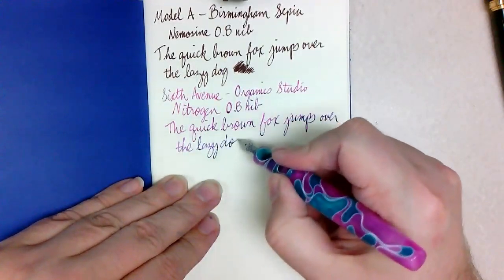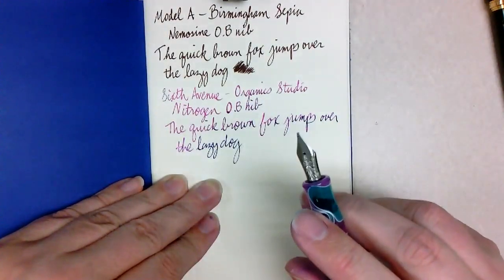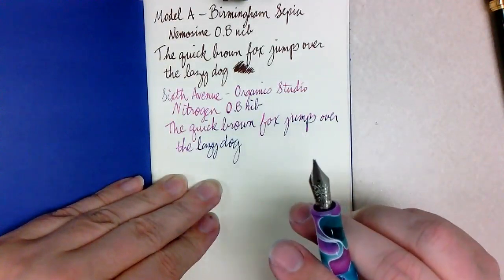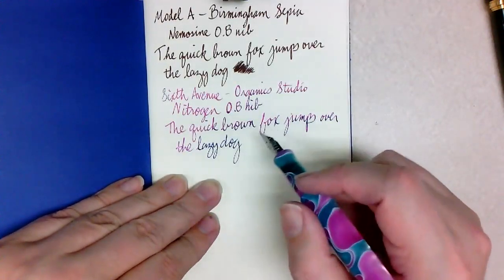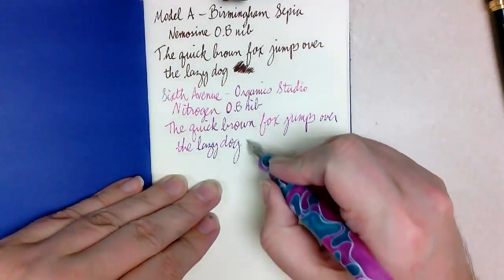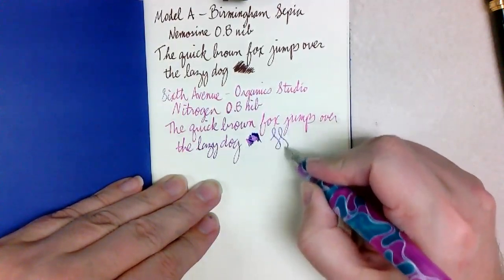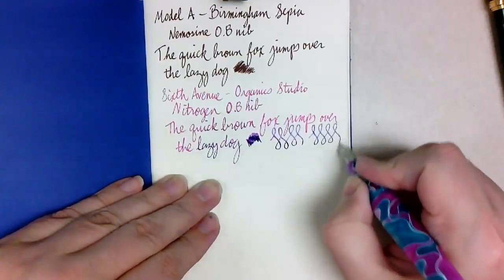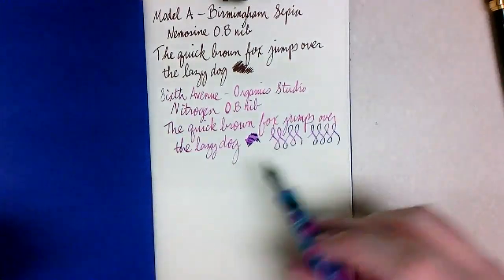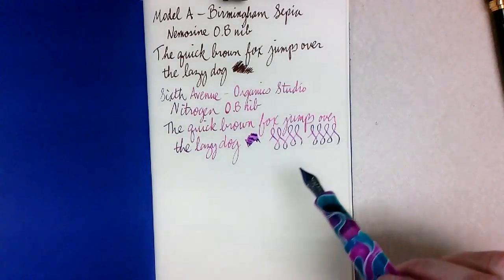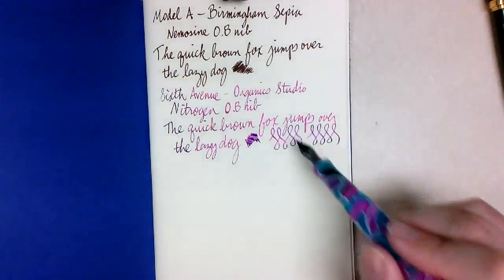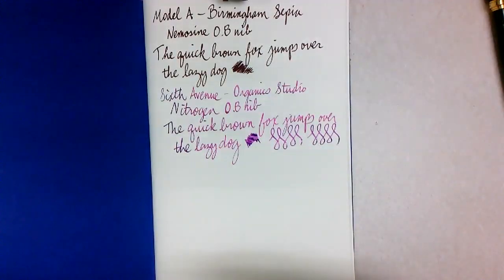And once this thing is going, you can see that we're not having any issues with flow. It's just something you're going to have to use. I think it's mostly the ink more than the nib. Because Organic Studio, I mean, that is a heavy sheen ink. So it does require a bit of work. Pen lays out a nice amount of ink, though, once you get it going, and of course the nib, because of the stub.